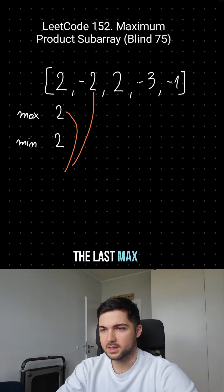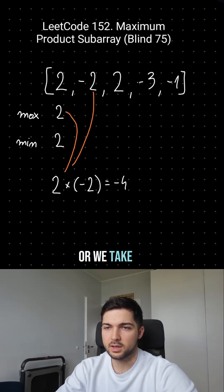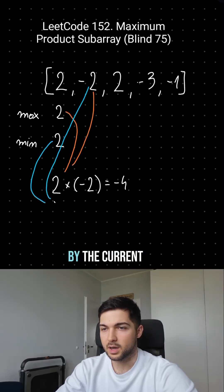We either take the last max and multiply by the current element, or we take the last min and multiply that by the current element.